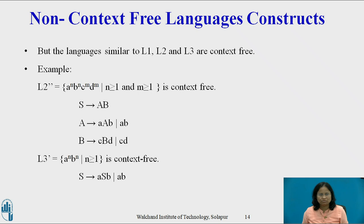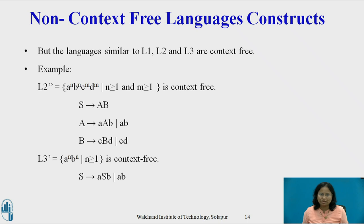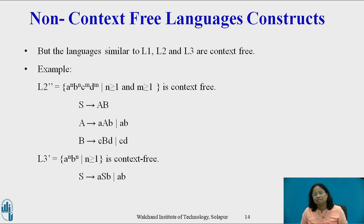L2' = {a^n b^n c^m d^m | n,m ≥ 1} is also a context-free language and the grammar for it is given. L3' = {a^n b^n | n ≥ 1} is context-free, with grammar S → aSb | ab.